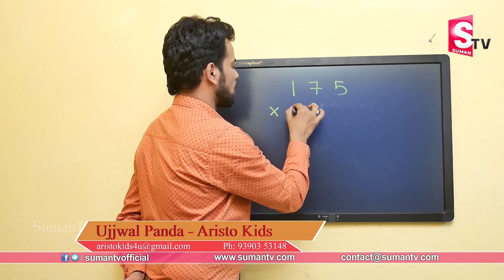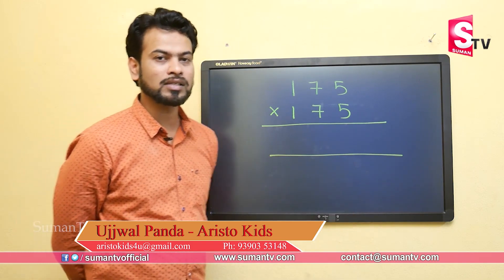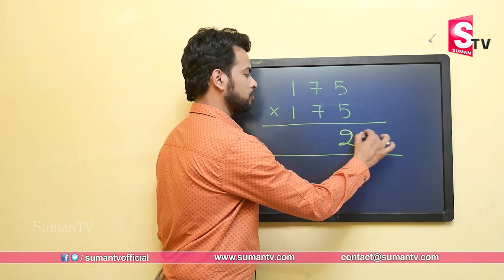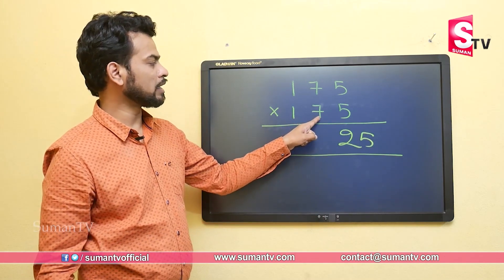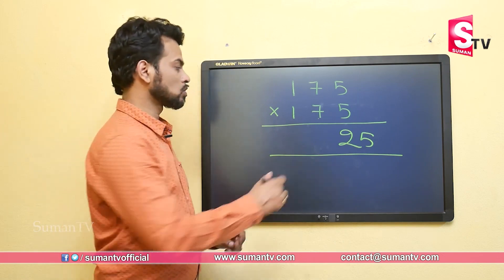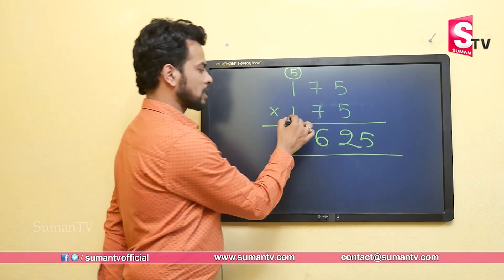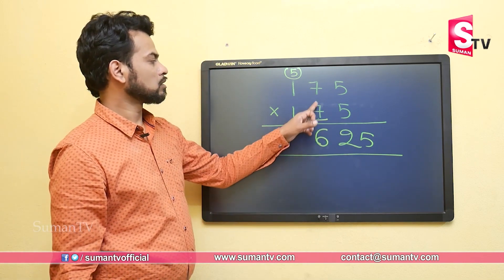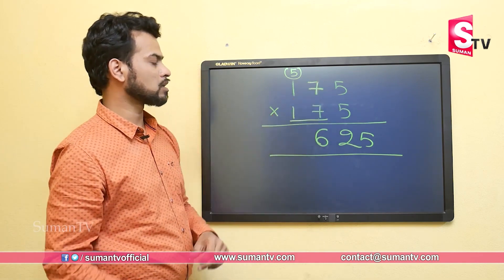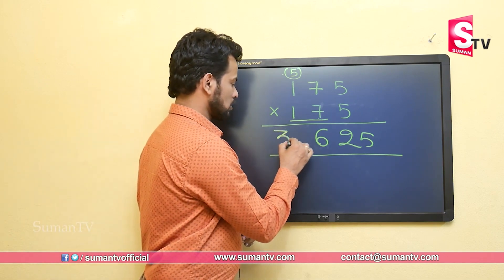One more example: 175 multiplied by 175. First step: 5 multiplied by 5 is 25. Second step: tens digit 7 multiplied by its successor 8 gives 56 — we place 6 here and take 5 as a carryover. Third step: take 17, add the successor of the tens digit — 17 plus 8 is 25, plus carryover 5, giving 30. So the answer is 30,625.